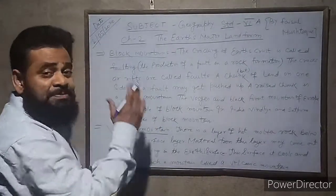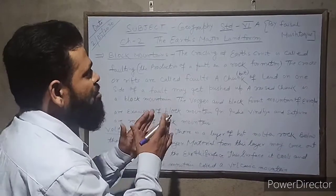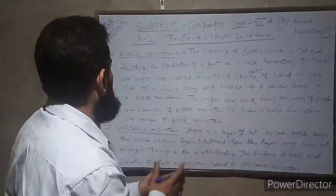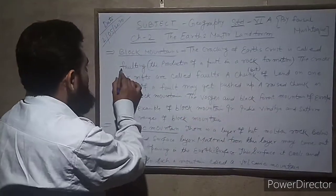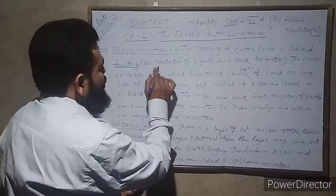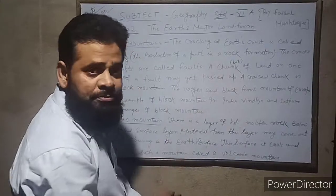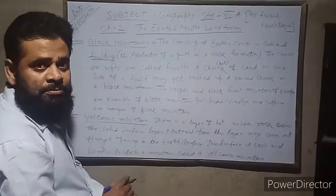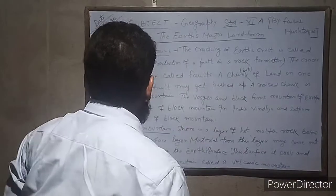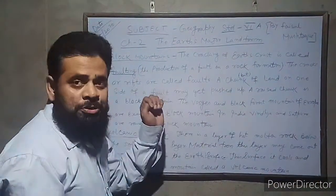What is the meaning of block mountain? Listen carefully. The cracking of the earth's crust is called faulting. Faulting means the production of a fault in a rock formation. The cracks or rifts are called faults.